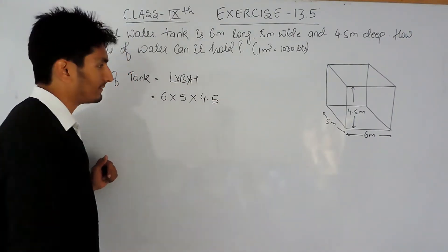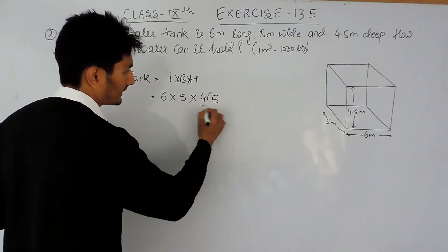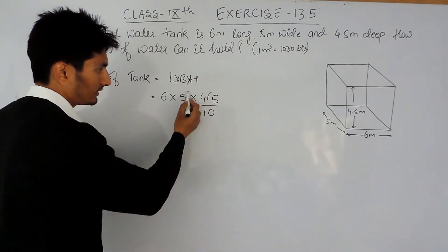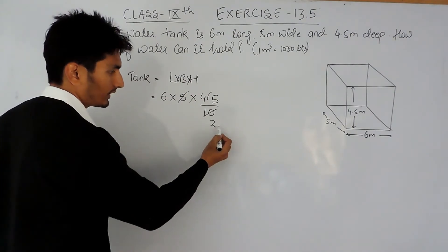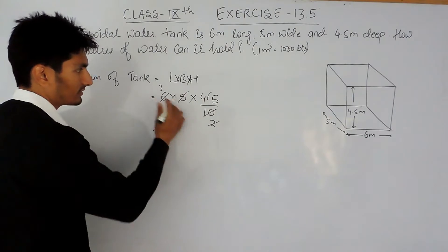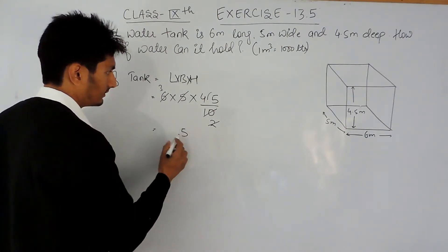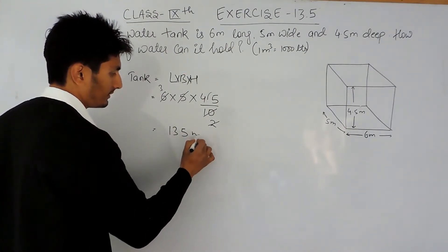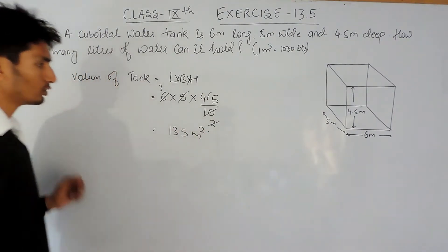Removing the decimal, I place 10 in the denominator. 5 can be cancelled 2 times and 2 can be cancelled 3 times. This gives us 135 cubic meters, so the volume of this tank is 135 meter cube.